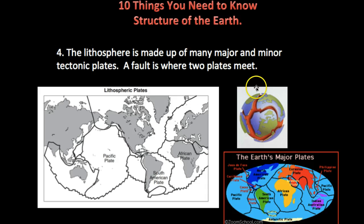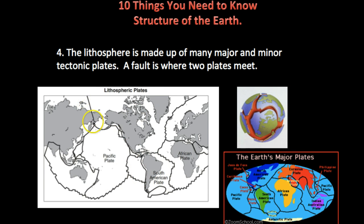The Earth is not just one gigantic smooth piece of crust. It's actually made up of major and minor tectonic plates, or lithospheric plates, as you can see here. These lines are called plate boundaries or fault lines, and it's where two tectonic plates meet, and a lot of interesting things happen.